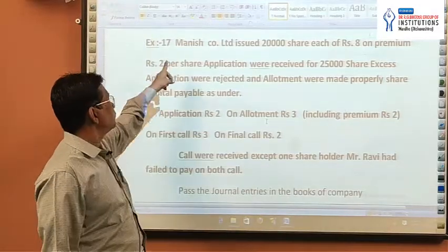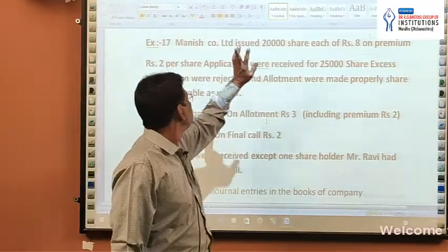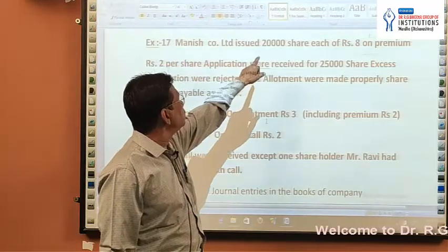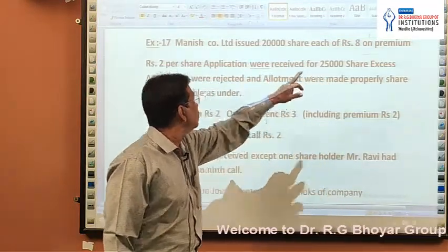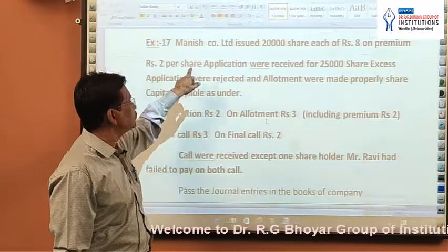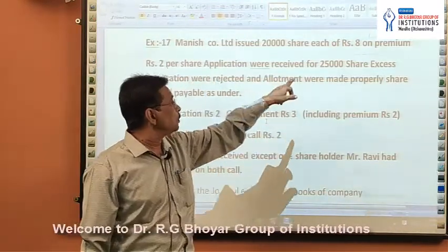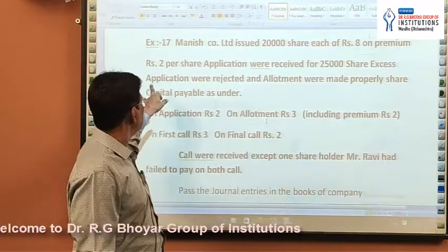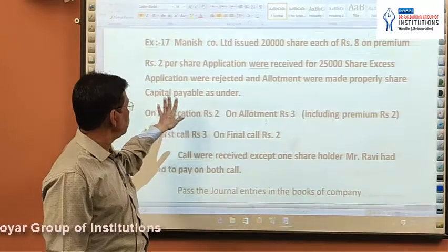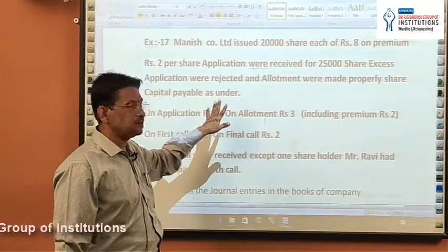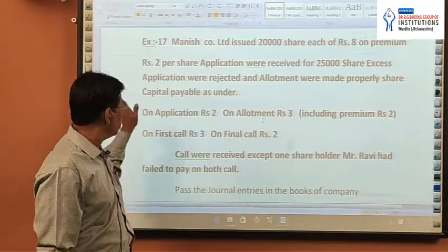Start the next example, again, which is based on premium. Manish Company Limited issued 20,000 shares each of Rs.8 on a premium of Rs.2 per share. Applications were issued for 25,000 shares. Excess applications were rejected and allotment were made properly. Share capital payable has been done — this information as usual, there is no change.